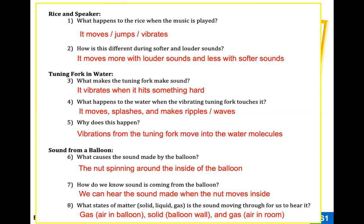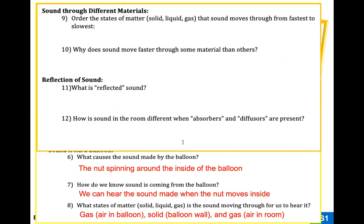For sound through different materials, the correct order from fastest to slowest is: solids, then liquids, then gases - as shown by the domino visualization. This seems counterintuitive - you might think fewer molecules in air means sound travels faster, like how you can run through air faster than water. But sound waves travel by moving from particle to particle. If particles are closer together, the sound wave can move faster. So sound travels much faster through solids than liquids, and faster through liquids than gases.